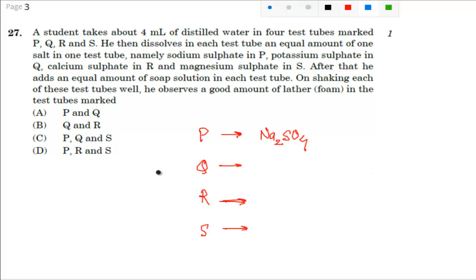Then next one is calcium sulphate in R, so it is CaSO4. And magnesium sulphate in S, so it is MgSO4.